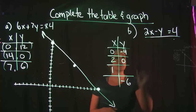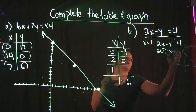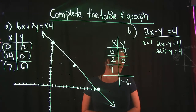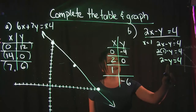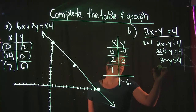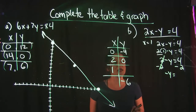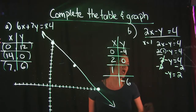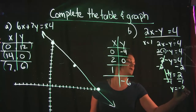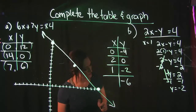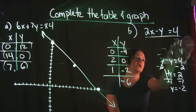Our next value is X = 1. Plugging 1 into the equation: 2 times 1 is 2, so we have 2 − y = 4. Subtracting 2 from both sides gives −y = 2. Dividing by negative 1 gives Y = −2. So when X is 1, Y is negative 2.